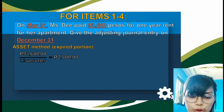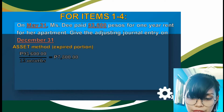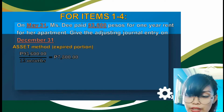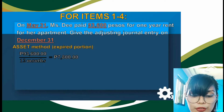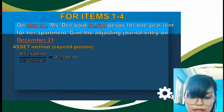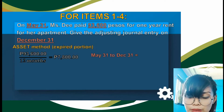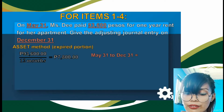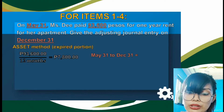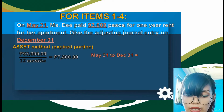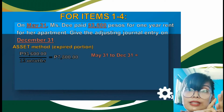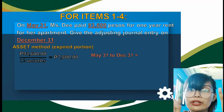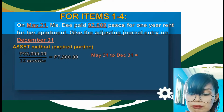To know the expired portion, we need to find out how many months of service have been rendered from the start up to the cut-off date. From May 31 to December 31, we count: June, July, August, September, October, November, December — that's 7 months. We call this the expired portion, or the portion already used.